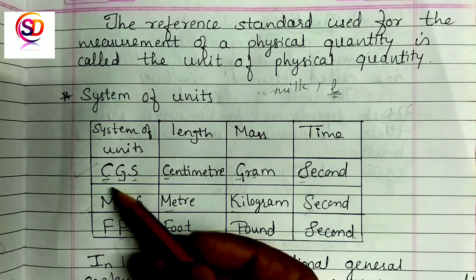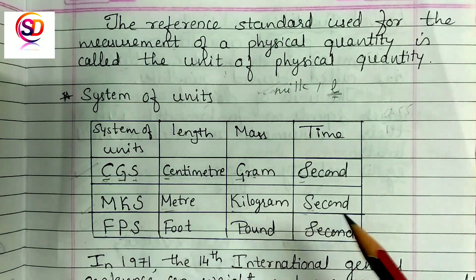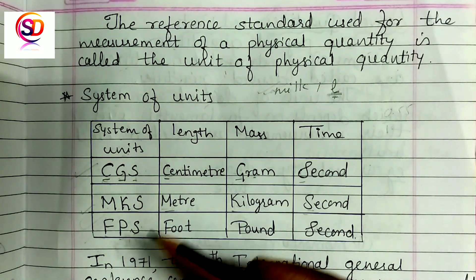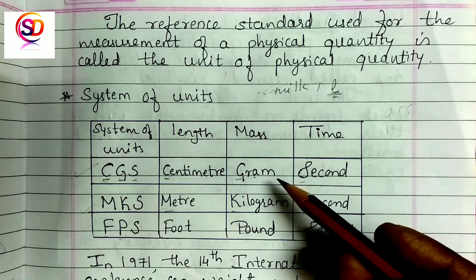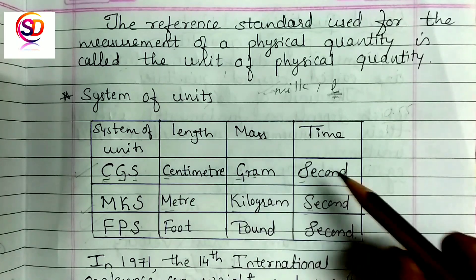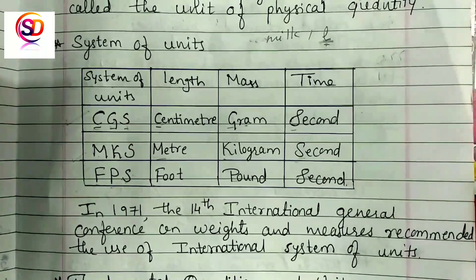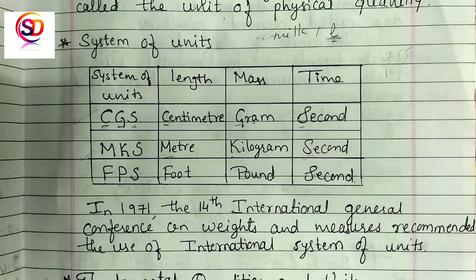Many countries were using these systems — CGS, MKS, FPS — according to their convenience. But when people or students migrated from one country to another for education or work, they faced difficulties due to the different systems used. So in 1971, the 14th International General Conference on Weights and Measures recommended the use of the International System of Units.